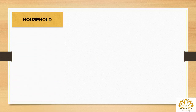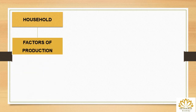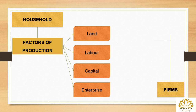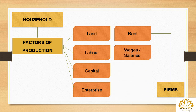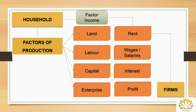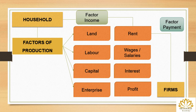The households help the firms to produce products or services by supplying the four factors of production: land, labor, capital, and enterprise. The firms utilize these and in return pay rent for land, wages or salaries for labor, interest for capital, and profit for enterprise. This rent, wages, interest, and profit is income for the household — it is called factor income. For the firms, paying for these factors is called factor payment.